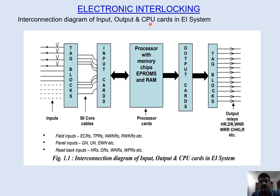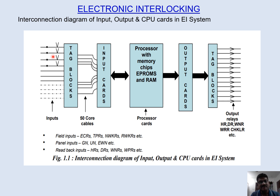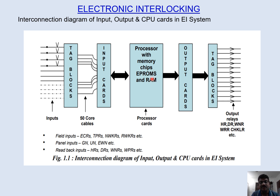The interconnection diagram of input, output and CPU cards in the EI system: input, output and CPU cards are the basic requirements for EI. Examples of inputs include TPRs, indication of points, and ECRs. All these things coming from the yard to inside are called inputs, which are given to the tag block. From there we bring them to the input cards of the EI — whether it is Kyosun EI, Hitachi, or MEDA — all have to be given to the input cards. From input cards, the data will be processed in the CPU which contains EPROMs and RAM.